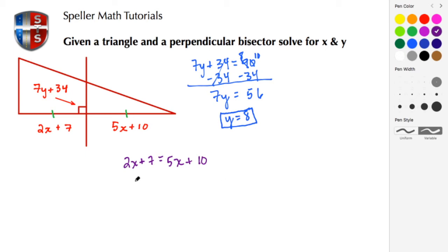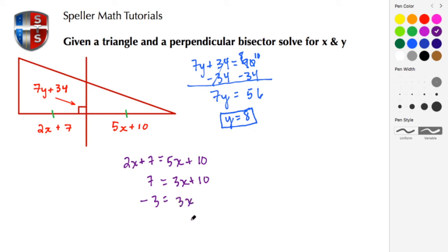Using basic algebra, we're going to move the X variable to the right-hand side by subtracting 2X from both sides. We're left with 7 on the left, and 5X minus 2X gives us 3X, plus 10 on the right. Next, we subtract 10 from both sides: 7 minus 10 gives us negative 3, and the 10s cancel, leaving 3X equals negative 3. Dividing both sides by 3, X equals negative 1.